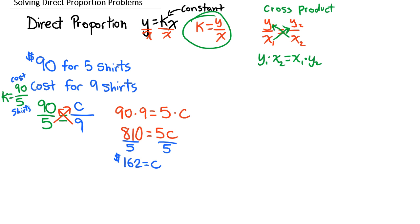So we can see then that 9 shirts will cost $162.